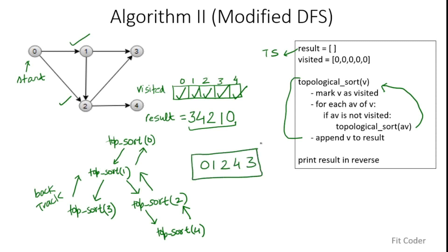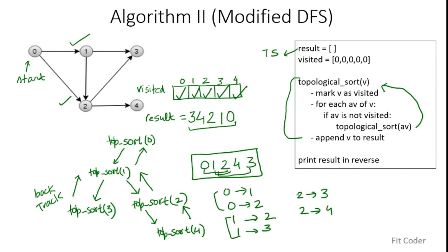We can verify this satisfies the topological sort properties. Edges are 0→1, 0→2, 1→2, 1→3, 2→3, and 2→4. We can see 0 is before 1 and 2; 1 is before 2 and 3; and 2 is before 3 and 4. By using a modified DFS we can find topological sort. There is also a stack-based variant where instead of printing the array in reverse, you simply pop from the stack. Both approaches are equivalent.